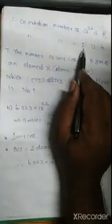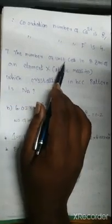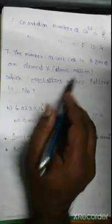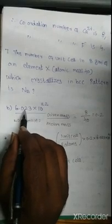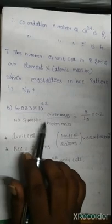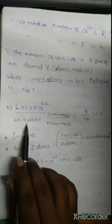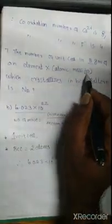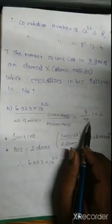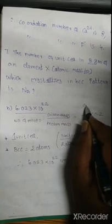Seventh question: find the number of unit cells in 8 grams of element X with molar mass 40, which crystallizes in BCC pattern. NA is Avogadro's number. Given mass = 8 g, molar mass = 40 g/mol, so moles = 8/40 = 0.2 moles.